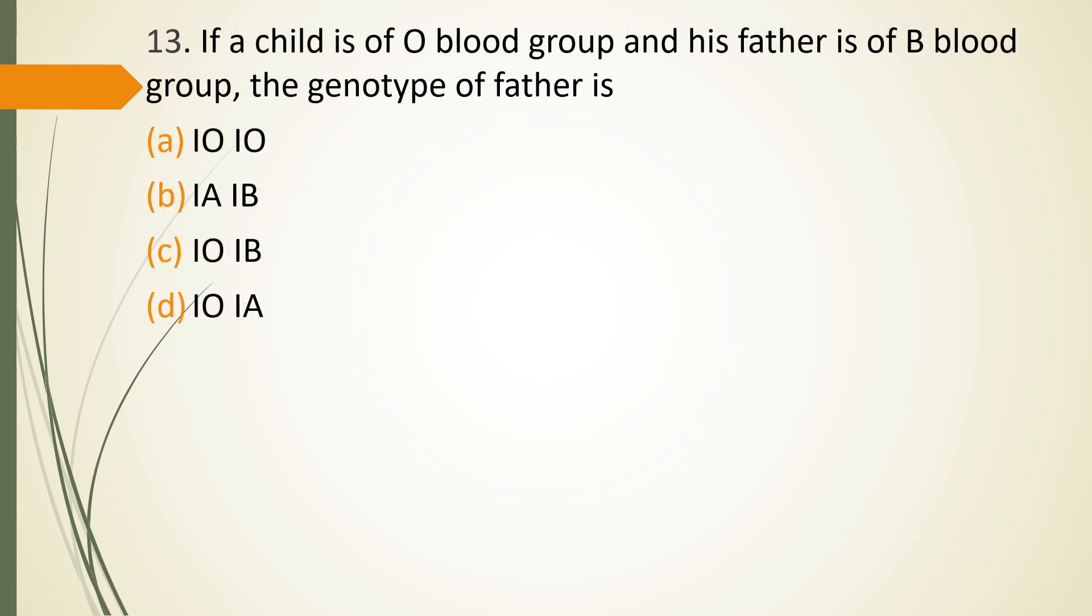Question 13. If a child is of O blood group and his father is of B blood group, the genotype of father is? IOIO, IA IB, IB IO, or IA IO. The correct answer is option C, IB IO.